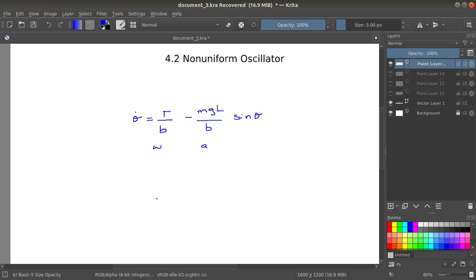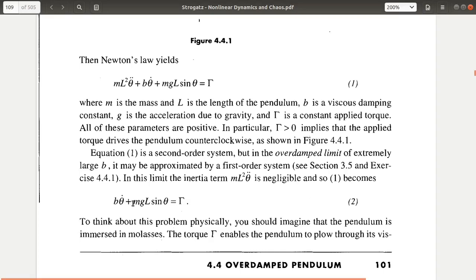So, when gamma is greater than MgL, then I will have a complete rotation of the pendulum. So, let us see what does that mean. So, if we see here.